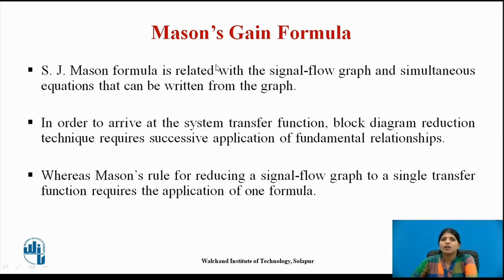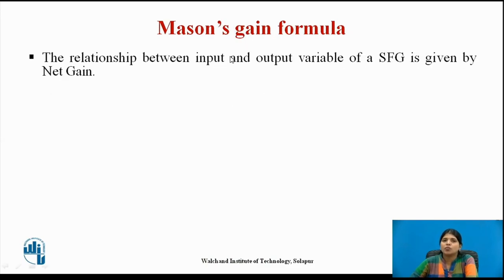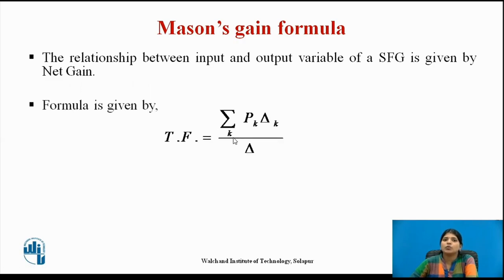Now we see Mason's Gain formula. Mason's formula relates the signal flow graph and simultaneous equations written from the graph. To arrive at the system transfer function, block diagram reduction requires successive application of fundamental relationships, whereas Mason's rule requires the application of one formula. The transfer function is equal to the summation of Pk·Δk divided by Δ.